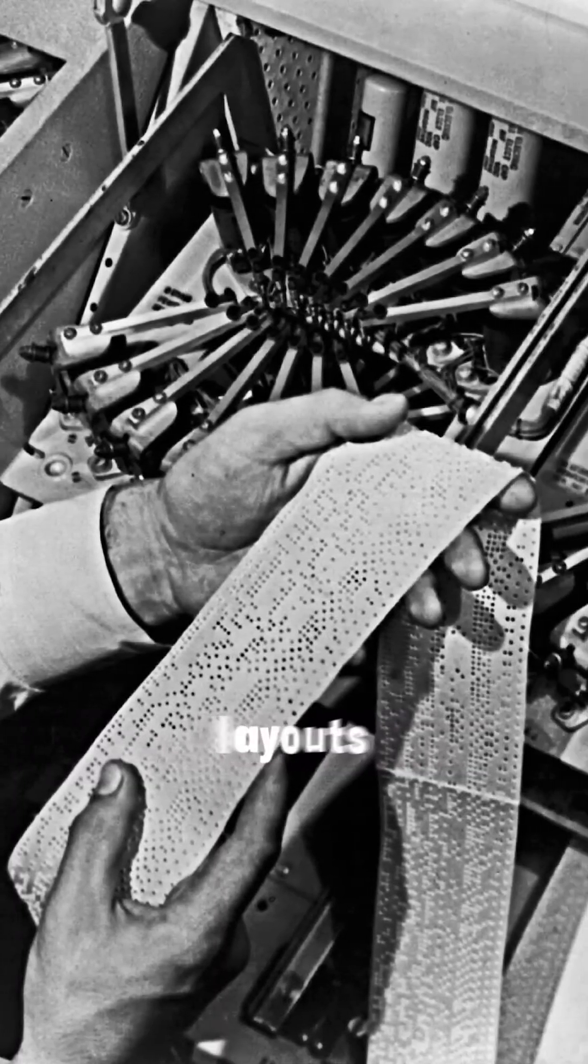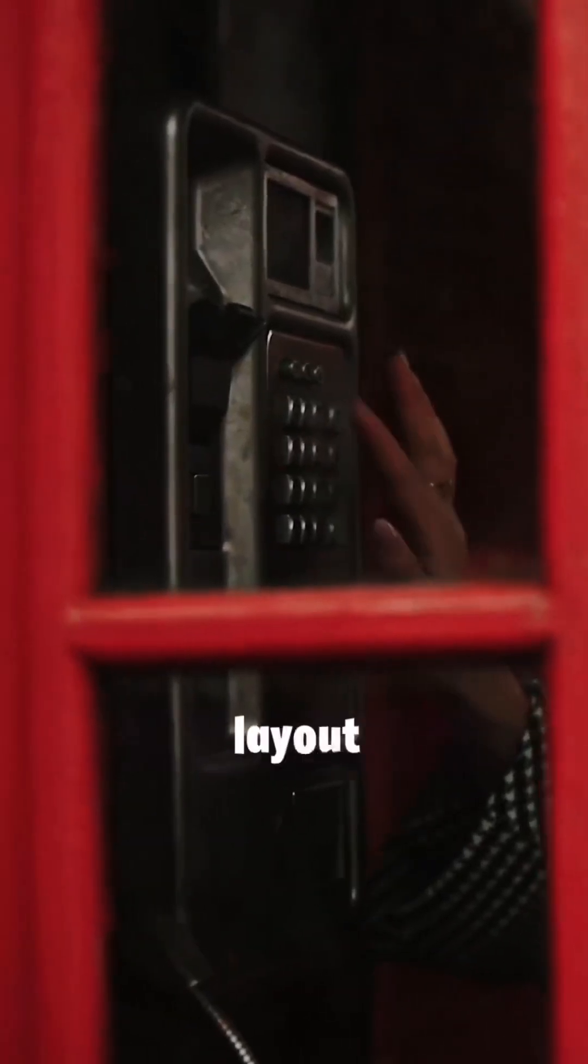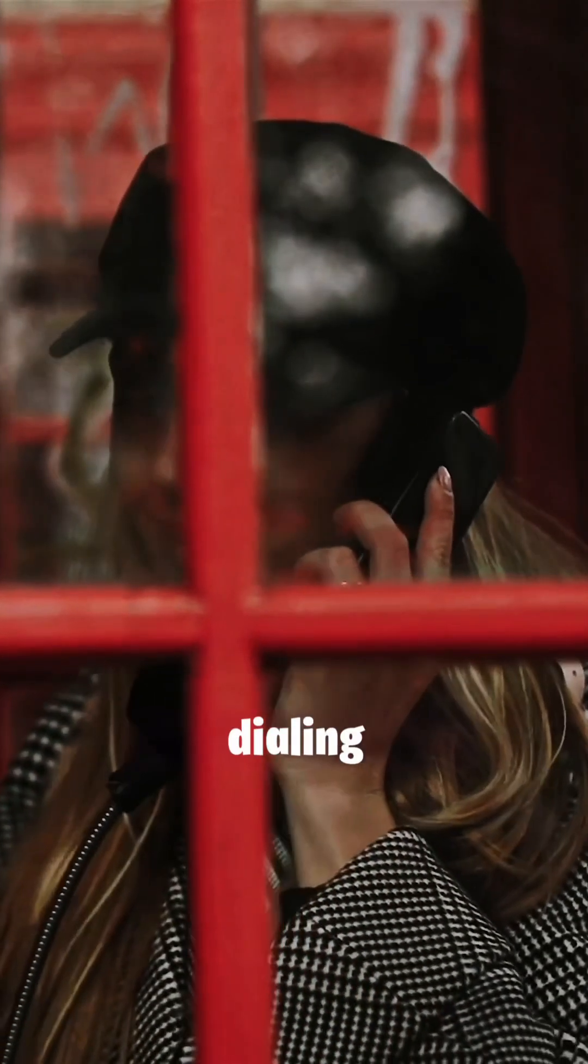Bell Labs tested several keypad layouts, including the familiar calculator design, but the 1-2-3 layout at the top consistently performed better for dialing. Why?